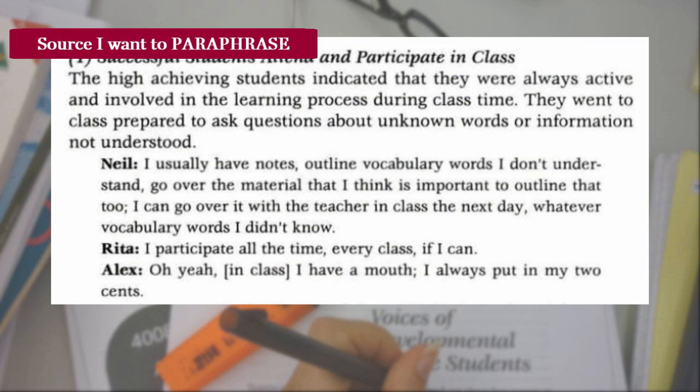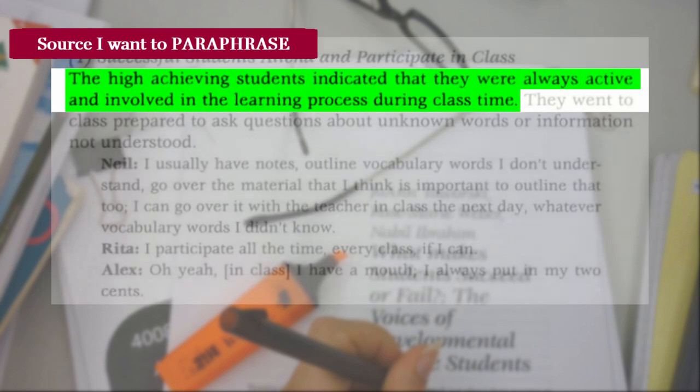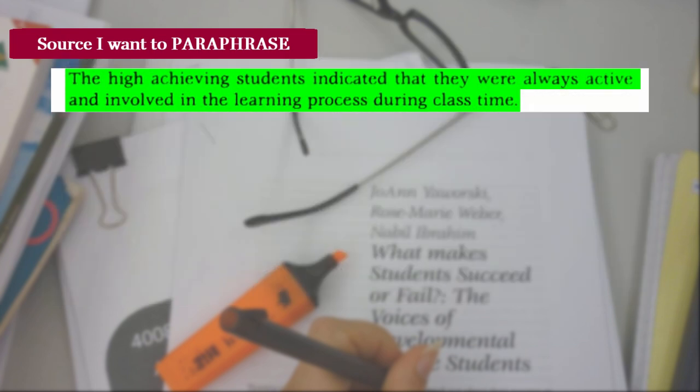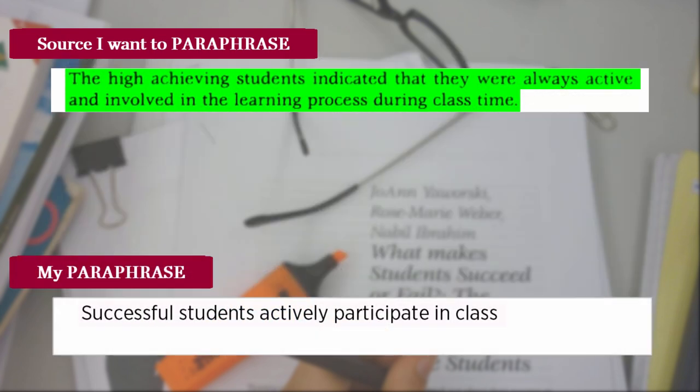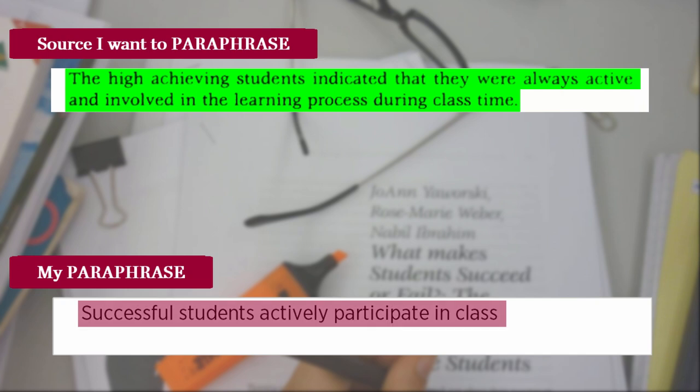Here is part of a journal article. To paraphrase this text, I put it in my own words — like this: 'Successful students actively participate in class.' See how my version uses different words but keeps the idea I want to use.